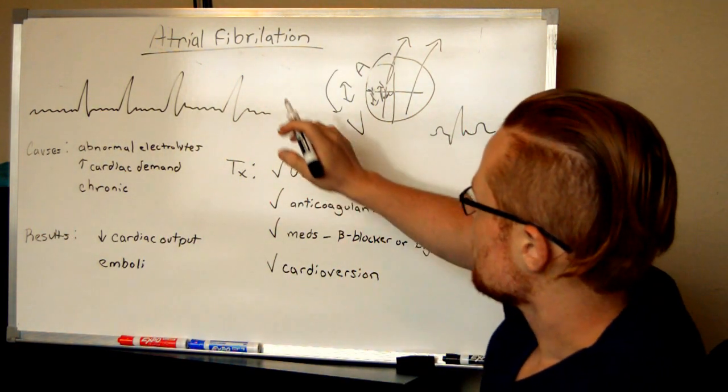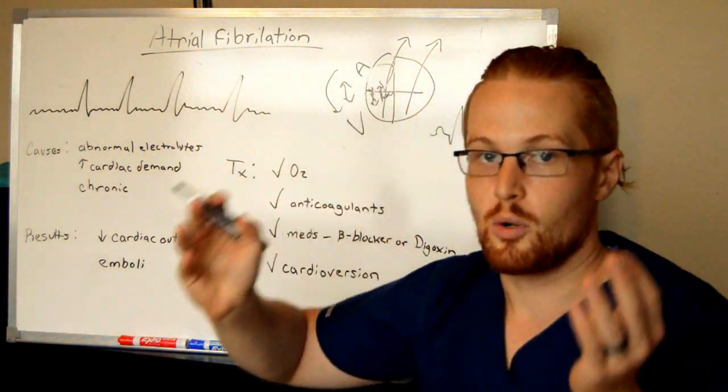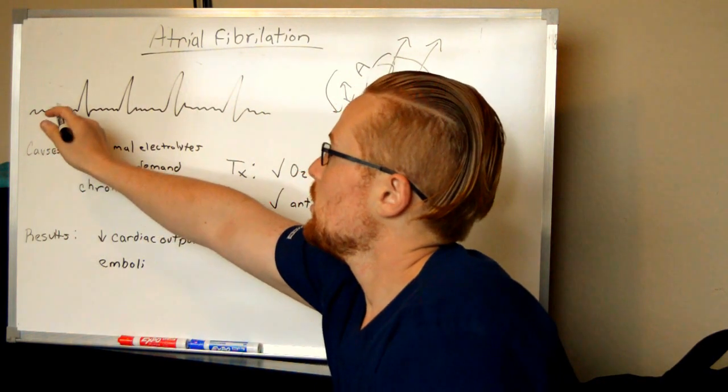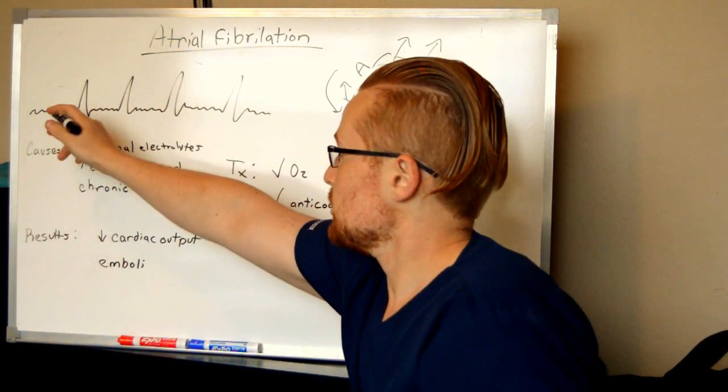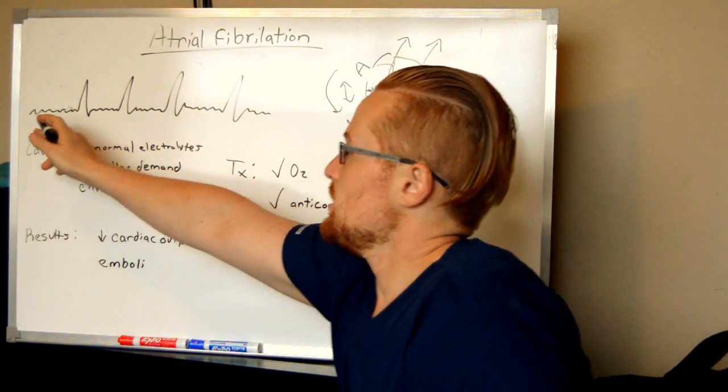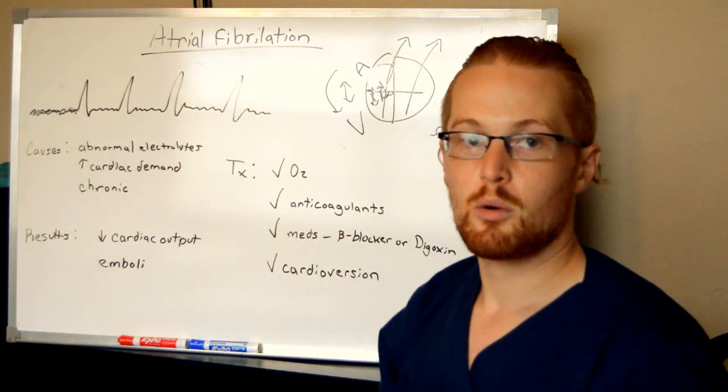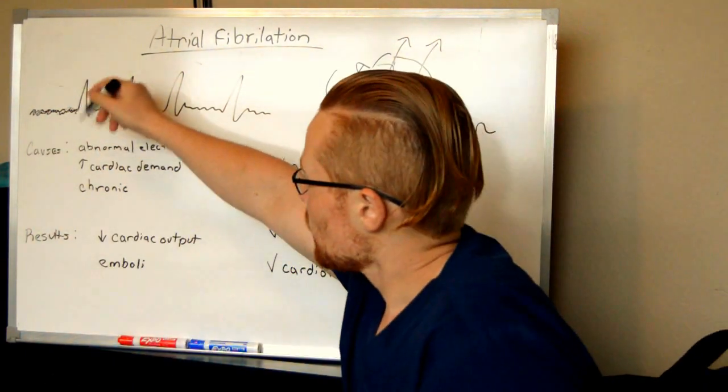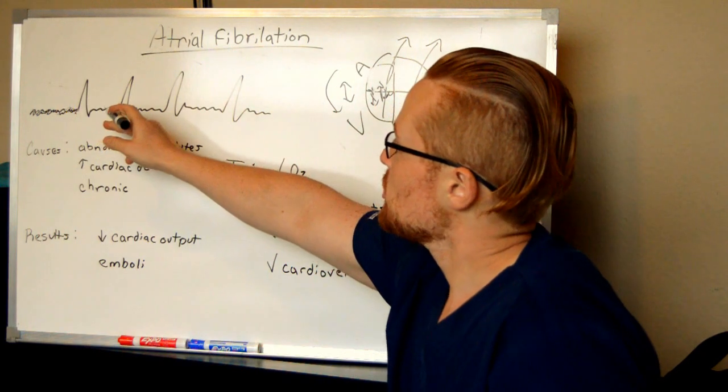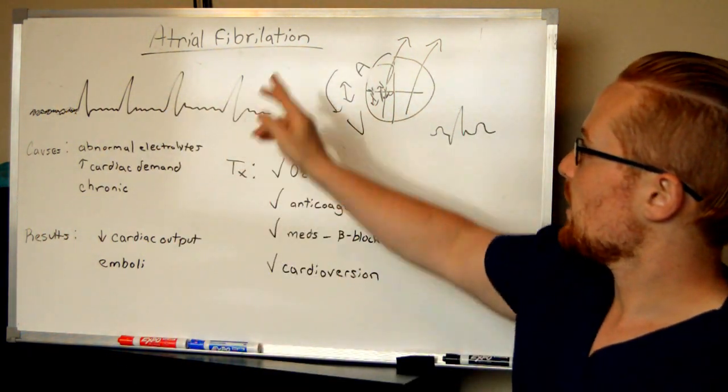Now, what happens is the P wave, which represents the atrium - the atrium are just going in overdrive. So what you'll see is no definitive P, but you'll just see a bunch of jags. This is showing what the atrium are doing - they're just fibrillating. There's no real rhythm to it. Then you'll see a normal QRS, bunch of jags, normal QRS, bunch of jags, normal QRS. And so this is a sign of atrial fibrillation.